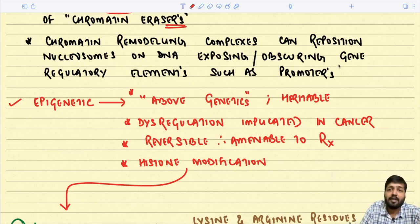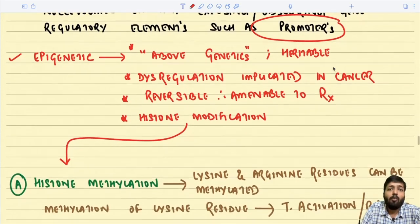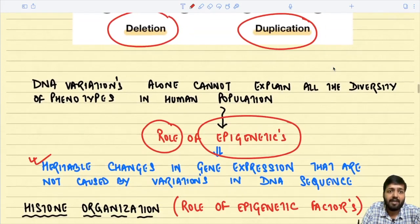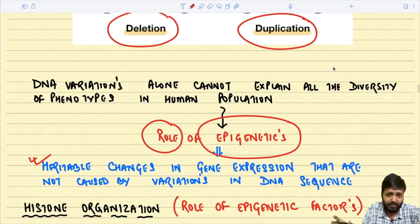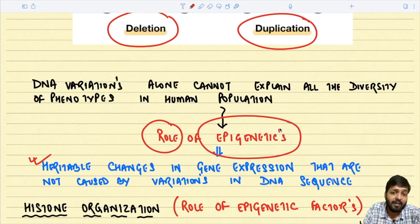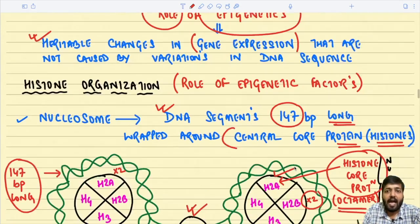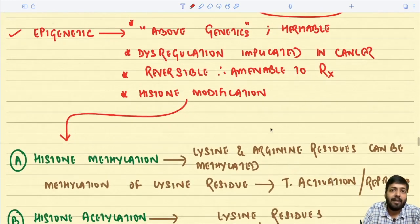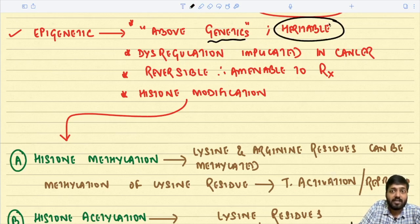Chromatin remodeling complexes can reposition the nucleosomes on DNA, thus exposing or obscuring gene regulatory elements such as promoters. Epigenetic changes are heritable changes in gene expression not caused by variations in the DNA sequence. The term epigenetics literally means 'above genetics.' These are heritable changes, and epigenetic alterations are implicated in cancer. Importantly, these changes are reversible and amenable to therapeutic intervention.